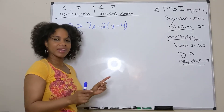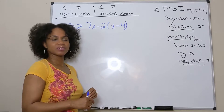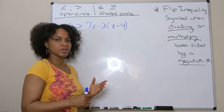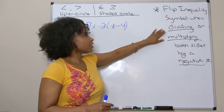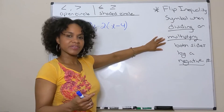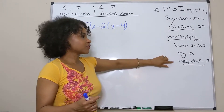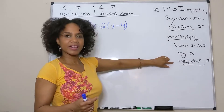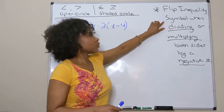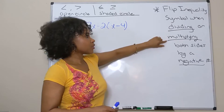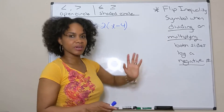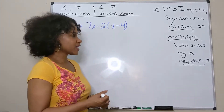The only added piece when you're solving multi-step inequalities is when you're dividing or multiplying both sides of the inequality, you're going to flip that inequality symbol. Flip the inequality symbol when dividing or multiplying both sides by a negative number.